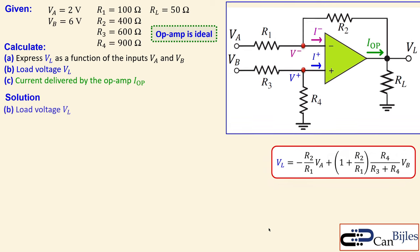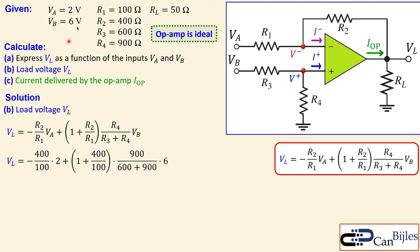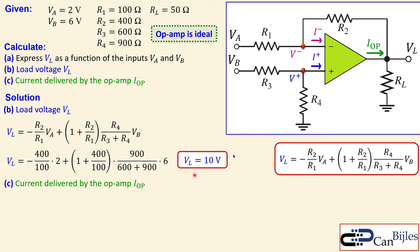Now we calculate the actual load voltage by substituting the component values: R2 equals 400, R1 equals 100, R4 equals 900, R3 equals 600, Vb equals six volts, and Va equals two volts. Working through the expression gives exactly 10 volts. Note the output can be negative if the Va contribution is larger than the Vb contribution.